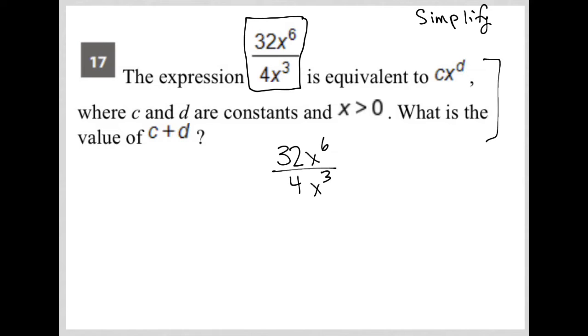Given that it has the anatomy of a simplified question, I'm going to just simplify what I have here. 32 divided by 4 is just 8, and x to the sixth divided by x to the third, you subtract the exponents and you end up with x to the third.